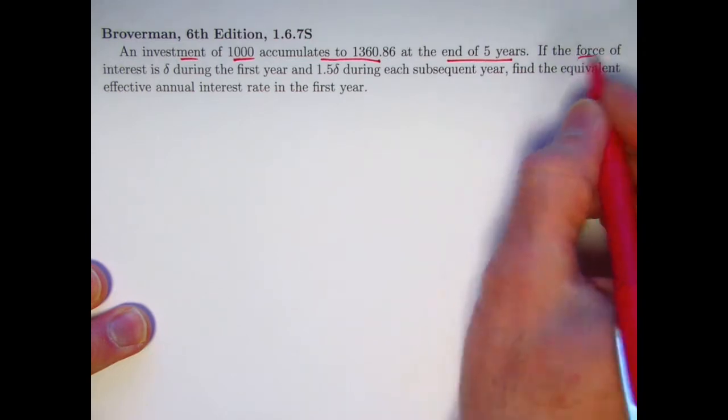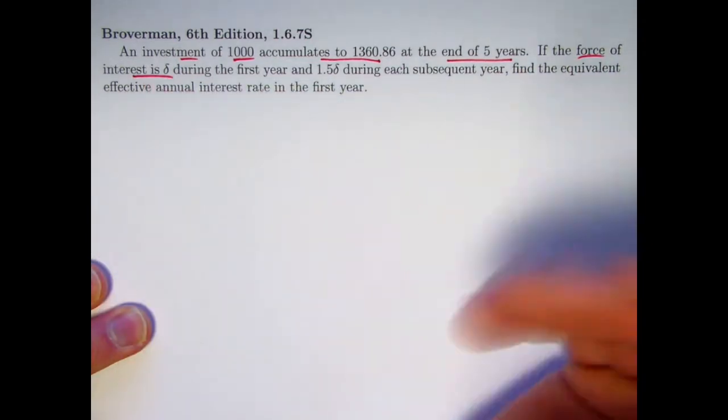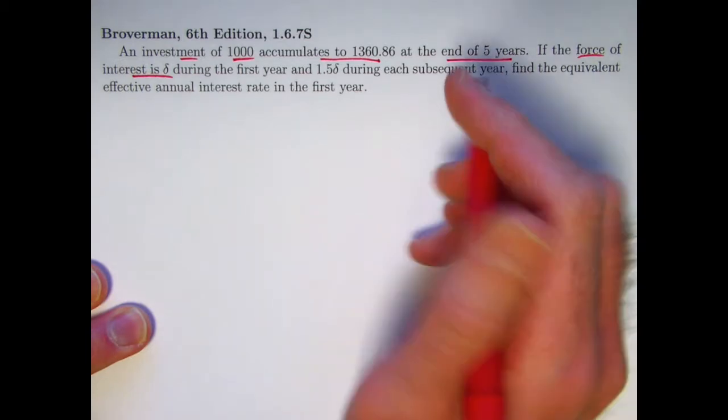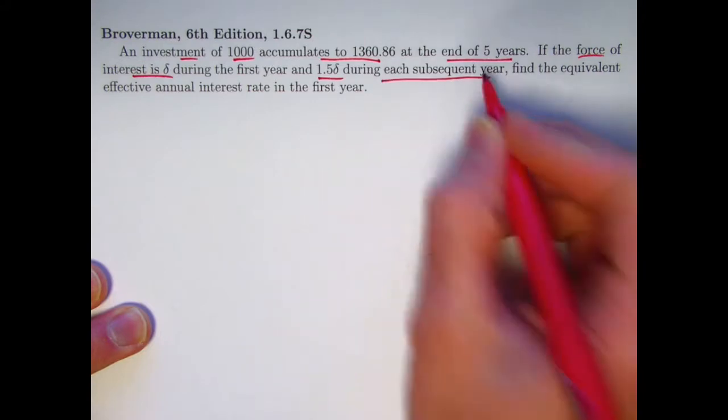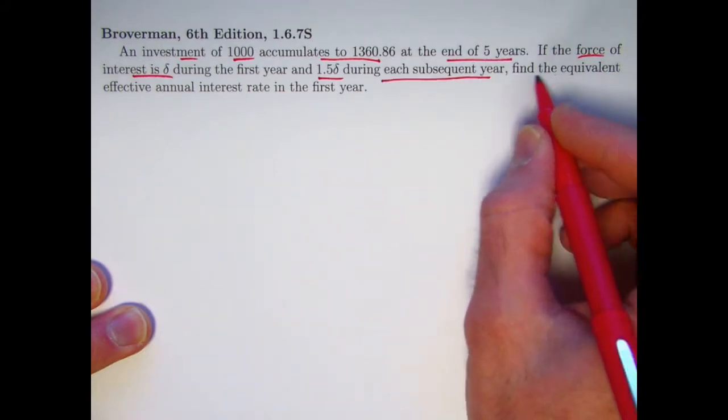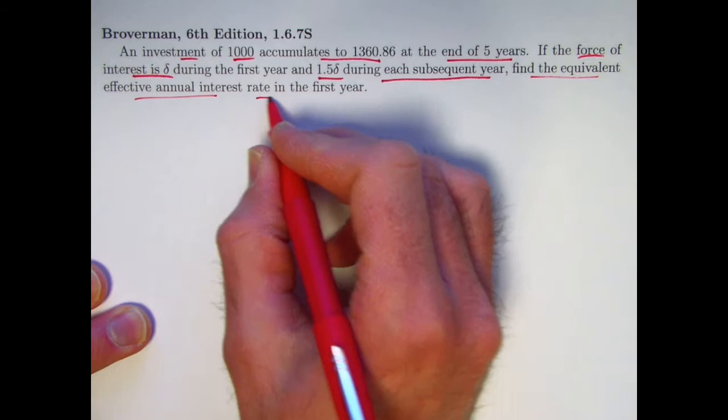During the first year you've got a force of interest of delta, a constant force of interest, that's exponential growth. But then it changes to another force of interest 1.5 times delta during each subsequent year. Find the equivalent effective annual interest rate in the first year.